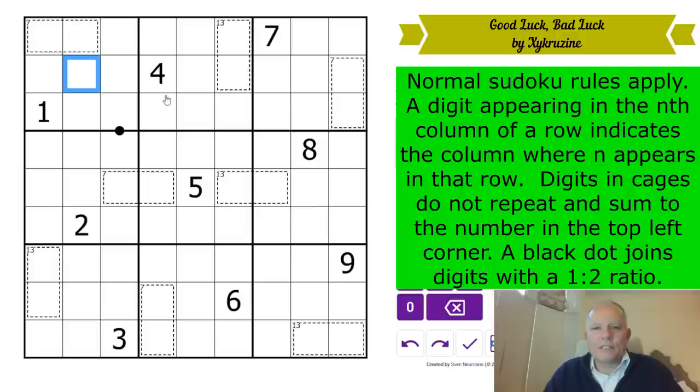We've got some killer cages which show their totals. We've got a black dot, a single one joining digits with a one-to-two ratio. Otherwise, we're using that indexing rule. Do give it a try. It's not a rule that I do very well with, but I do know one or two things about it. We mentioned them in previous videos. I hope I haven't solved this on the channel before. You never know with my memory, I might have done. I don't think so though.